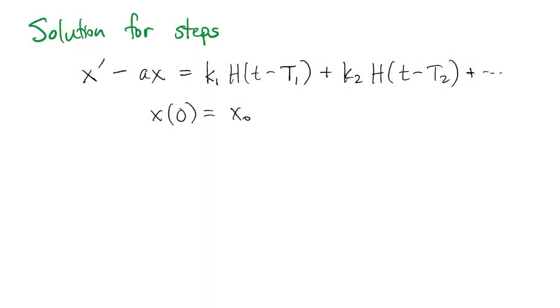Here's a solution procedure where you have step functions in the forcing. We're going to use a constant coefficient A here, and we're going to assume these K1, K2, and so on are all constants as well. So this is actually a piecewise constant forcing. Our approach is going to be sort of a divide and conquer.